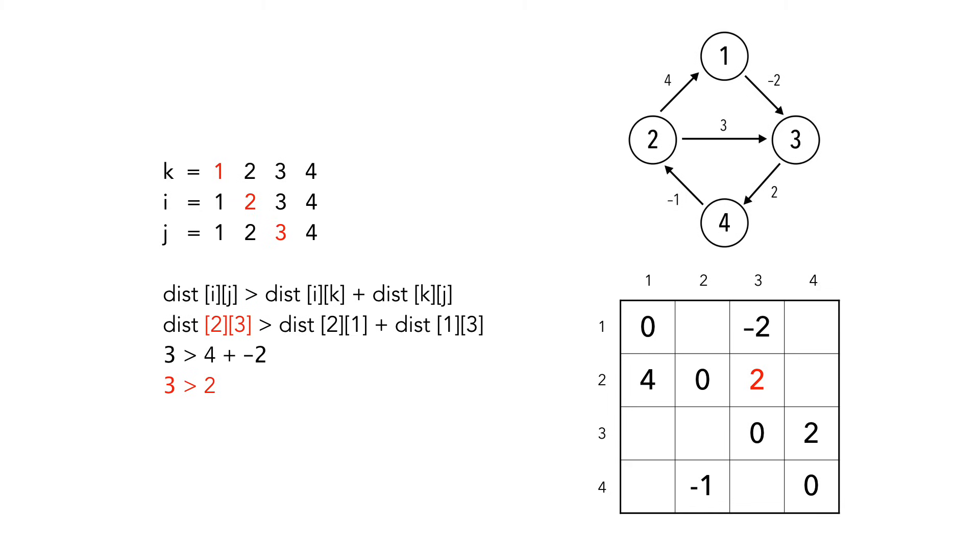Again, let's skip ahead to an interesting iteration. This time with k equal to 2, i equal to 4, and j equal to 1. We found a new shortest path from 4 to 1, with a weight of 3, so we update our table.